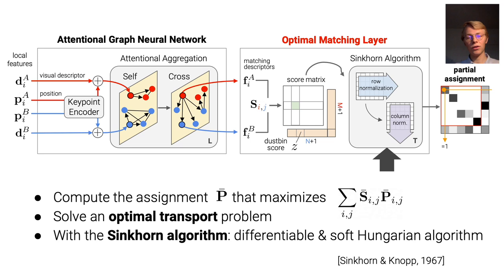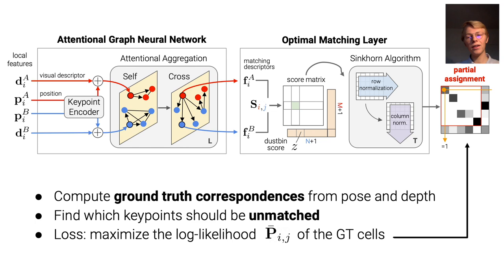SuperGlue is trained end-to-end in a supervised manner by maximizing the likelihood of ground truth correspondences, which are extracted from ground truth poses and depth maps.